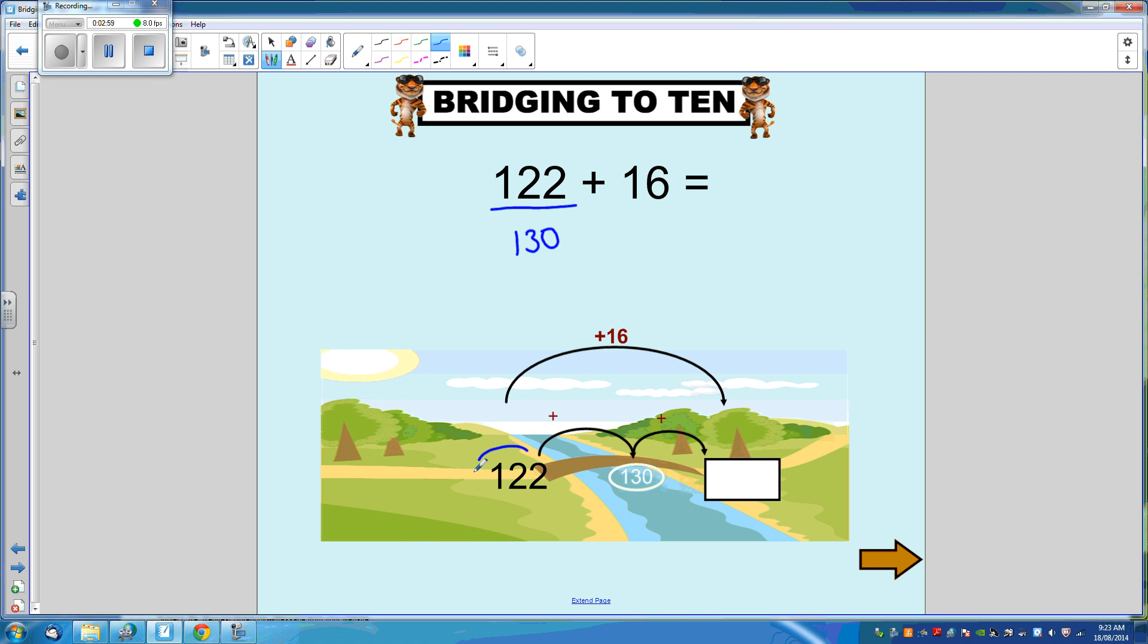So we start at 122 and using our knowledge of friends of 10 we know that if we add 8 we can get to 130.